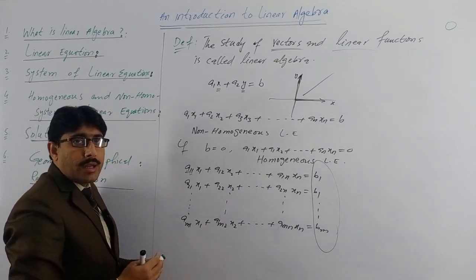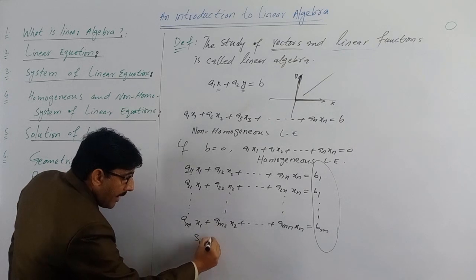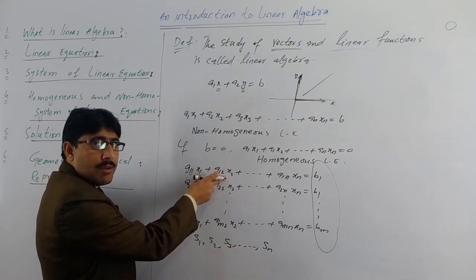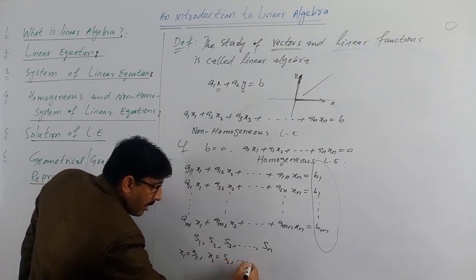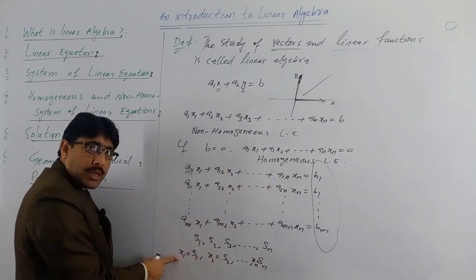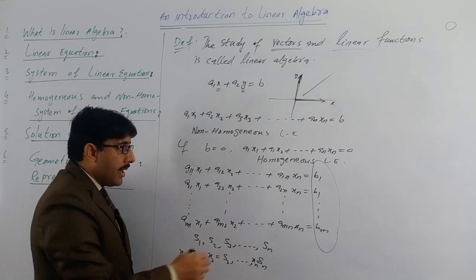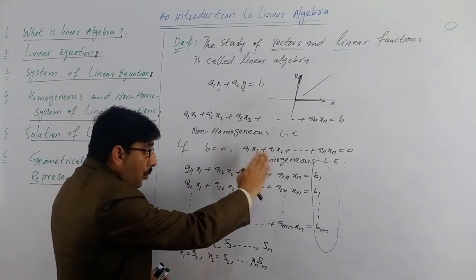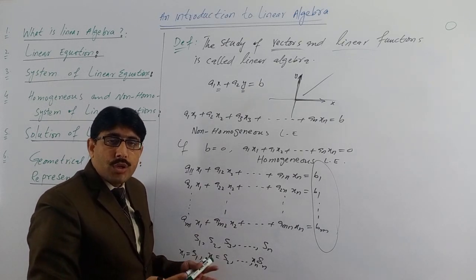اب اس system of linear equations کا solution کیا ہے؟ Solution ایک sequence ہوتا ہے numbers کا۔ Suppose کرتے ہیں s1, s2, s3, ..., sn۔ This sequence of numbers is known as a solution to the system of linear equations if — اگر ہم x1 کی جگہ s1 put کریں، x2 کی جگہ s2، اور xn کی جگہ sn put کریں in the system of equations، اور وہ تمام equations satisfy ہوں — تو s1, s2, s3 up to sn are called the solution of the system of linear equations۔